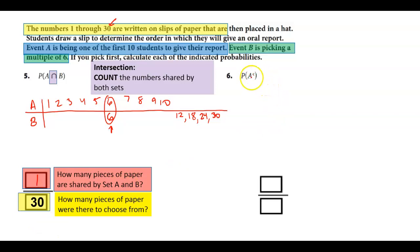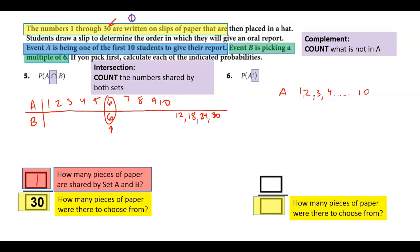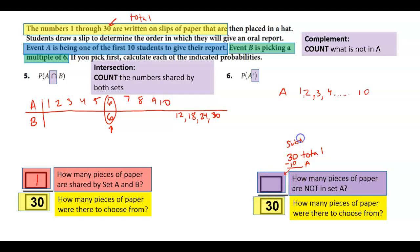Now for probability of A with this little tiny C, remember that tiny C means what's not in A. So if A are the first ten numbers, 1, 2, 3, 4, I don't want to write down the whole thing, but it's up to 10. Again, how many are there to choose from? Total, there's thirty. How many pieces of paper are not in A? Well, if there's ten that are in A and there's thirty total, I wonder if ten are in A and there's thirty total, how much is not in A? Hint hint, I subtracted.